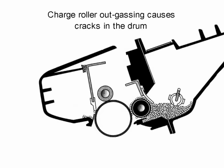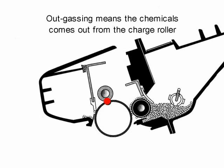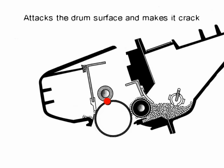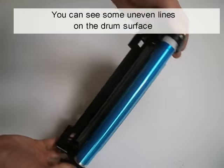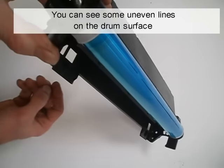Charge roller outgassing causes cracks in the drum. The charge roller sitting for a while on the drum will leave a horizontal mark on the drum. Outgassing means the chemical comes out from the charge roller, attacks the drum surface, and makes it crack. You can see some uneven lines on the drum surface.